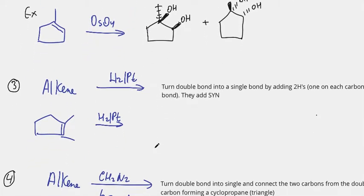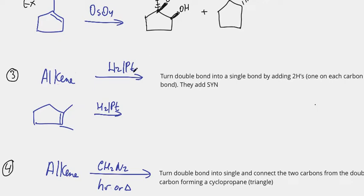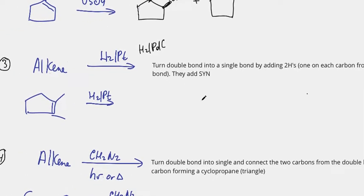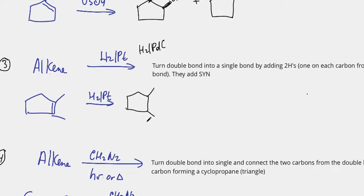The next reaction is alkene with H2/Pt — Pt is a catalyst. Another common version is H2/Pd-C. There are other catalysts as well, so check your professor's notes. For this reaction, I turn the double bond into a single bond by adding two hydrogens, one on each carbon from the double bond. The two hydrogens add syn, meaning both wedges or both dashes. If the hydrogen is a dash, the methyl group next to it would be a wedge. That would be the product if you have to show stereochemistry.